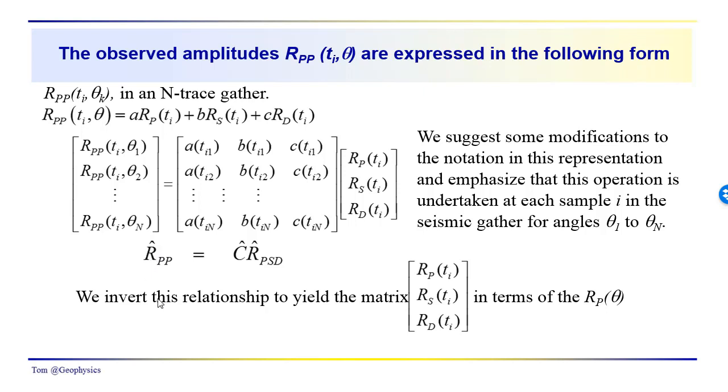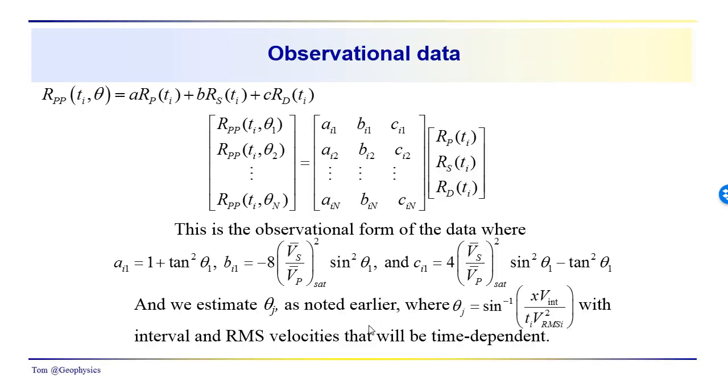This relationship gets inverted, and we're after these terms - these are the terms that we want to determine. We don't know what they are yet, so we have to go through this inversion process in order to get these different reflectivities.